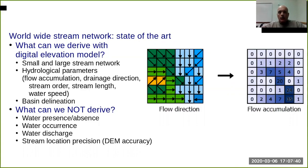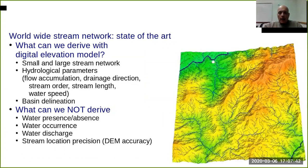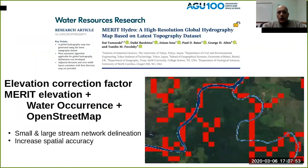It's thanks to the combination of these two elements that you can identify the presence of water in a determinate stream or valley area. Dai Yamazaki released MERIT-Hydro in 2019, and by the combination of water occurrence as satellite imagery,